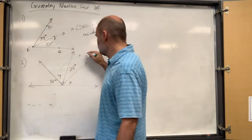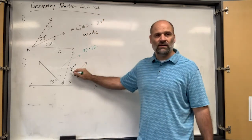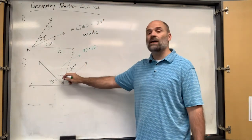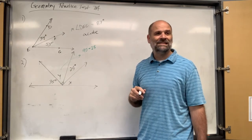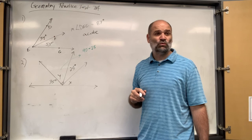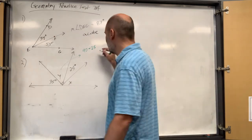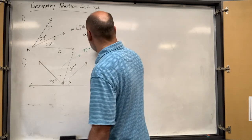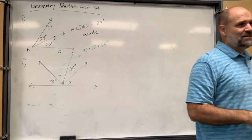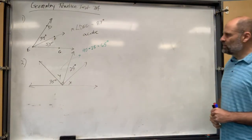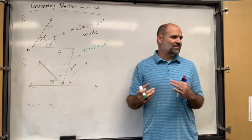So 90 minus 25 gives us 65 degrees. That's what y is — 65 degrees. I always mix up whether it's 180 minus something or 90 minus something, but since it's a right angle it's 90.